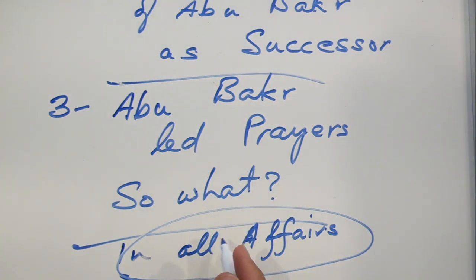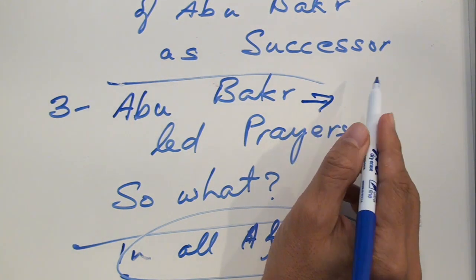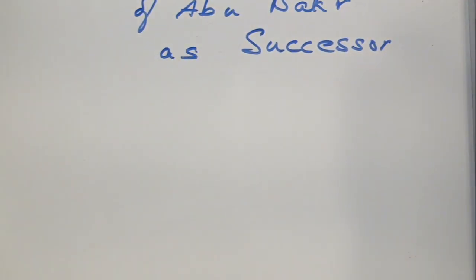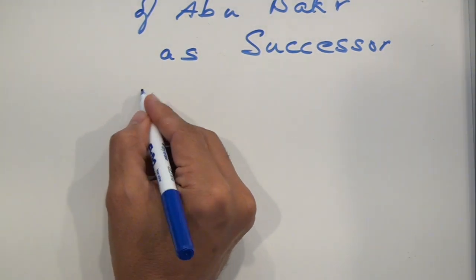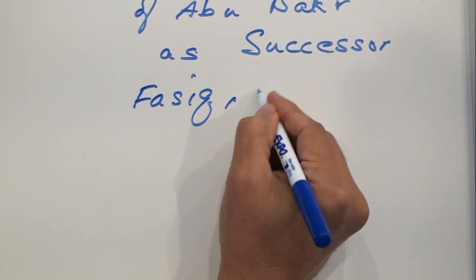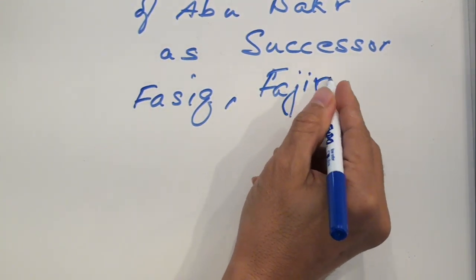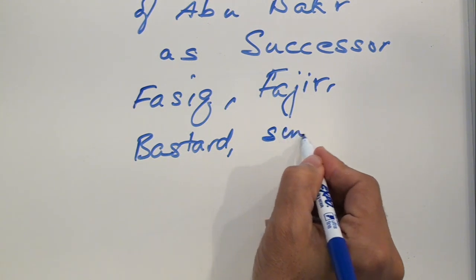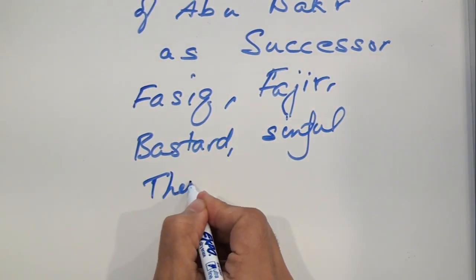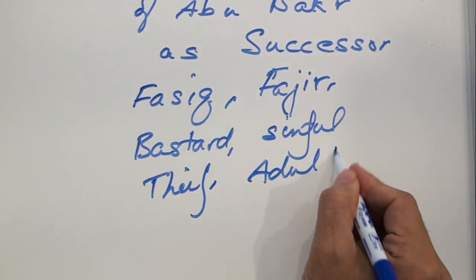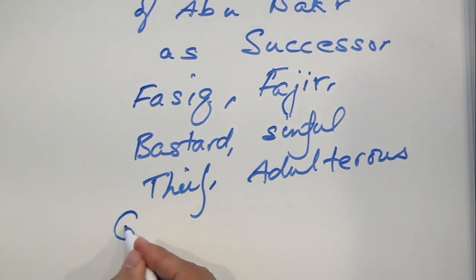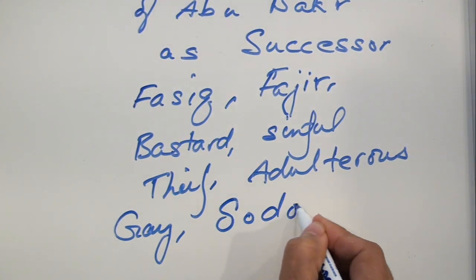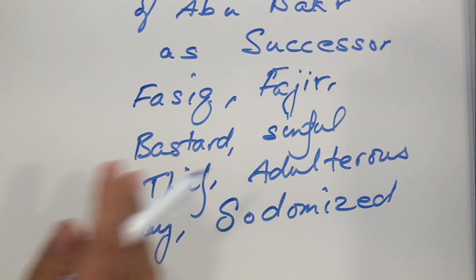Even if we agree, even if we submit and embrace that, let's say, Abu Bakr did indeed lead prayers in those days, how does it prove? Especially, especially the Umaris believe that a person who is fasiq, who is a fajir, who is a bastard, a person who is extremely sinful, he's a thief, he's adulterous, he is gay, he's a sodomized, whatever, you mention it. Any sort of bad character you mention, he can lead prayers.